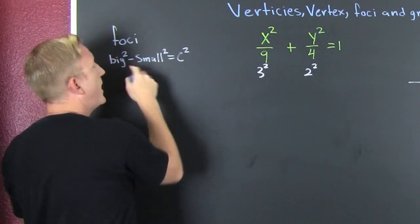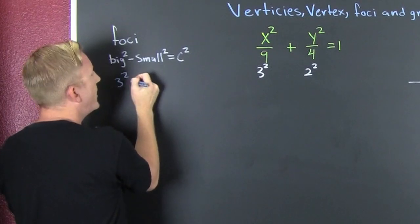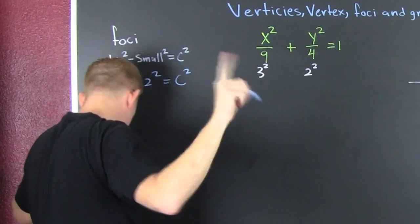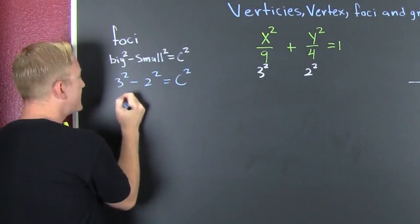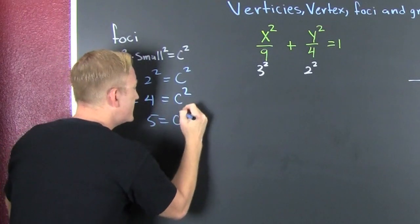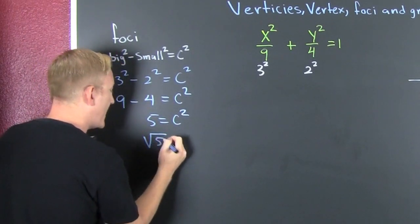So the big one is three, so this is three squared minus two squared is c squared. So we see that this is going to be nine minus four is c squared, so then five is c squared. So the square root of five - you take the square root of both sides, but you're not going to forget that plus or minus.